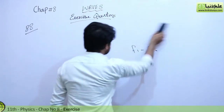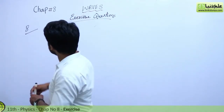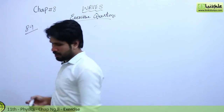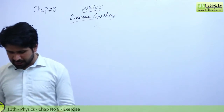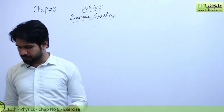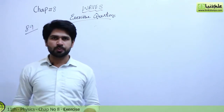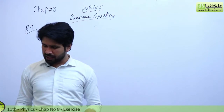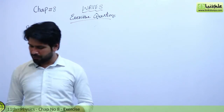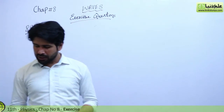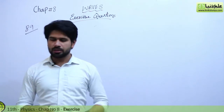Now we are going to discuss next question 8.9. The statement of this question is: as a result of a distant explosion, an observer senses a ground tremor and then hears the explosion. Explain the time difference. I repeat: as a result of the distant explosion, an observer senses a ground tremor and then hears the explosion. Explain the time difference.